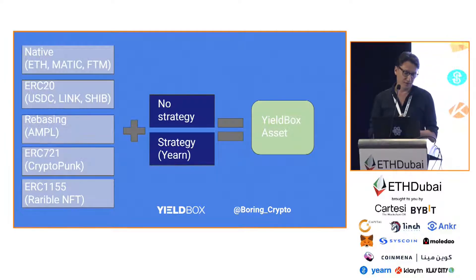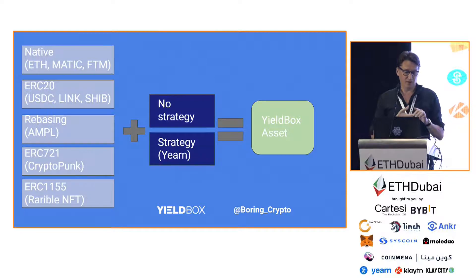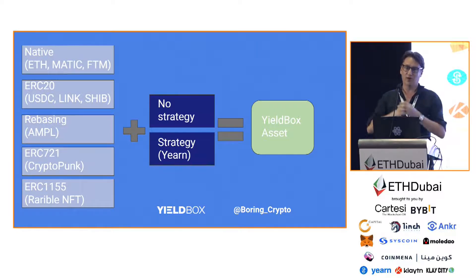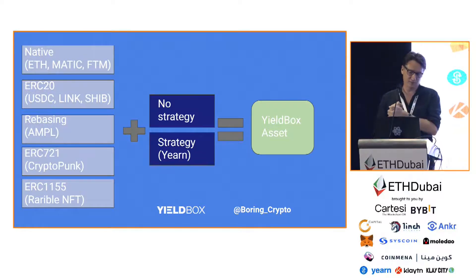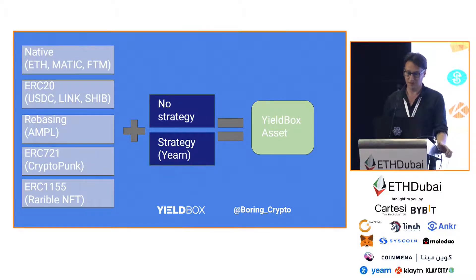So these are all the different token types. You can take any token — whether that's a native token, an ERC20, a rebasing token, an NFT, or an ERC1155. You can combine that with either no strategy or any strategy. It's completely permissionless, so anyone can write strategies and people can choose those. That all gets wrapped up into a Yieldbox asset. Those assets are uniform, so as a protocol you don't have to worry about how that asset works or what it actually is.